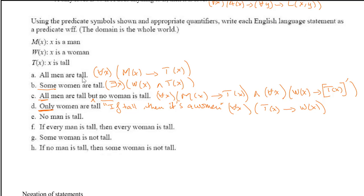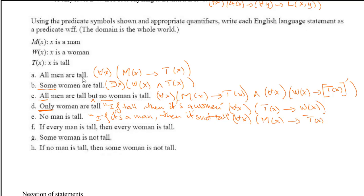'No man is tall.' In English: if it is a man then it is not tall. Symbolically: for all x, M(x) implies not T(x) — ∀x(M(x) → ¬T(x)). This is the universal negation applied to the predicate tall over the domain of men.